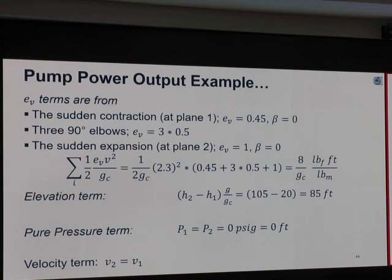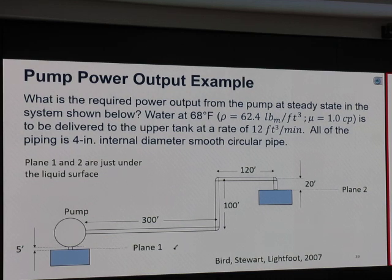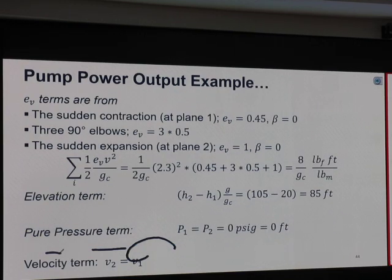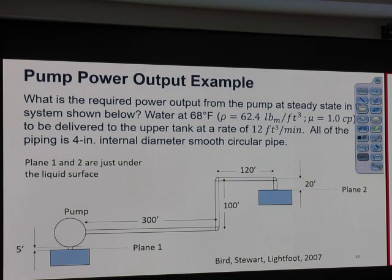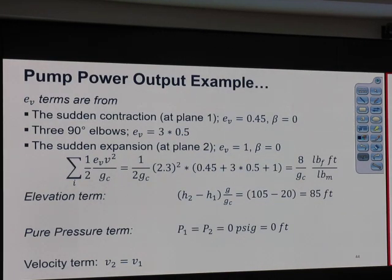Then we calculate V sub V term, acceleration of pressure loss. What do we have? We have sudden contraction at plane one. Plane one is over here. So it's kind of from very large to a pipe, right? So that accelerational pressure loss is sudden contraction. Then it has, after sudden contraction, we have three 90-degree elbows.